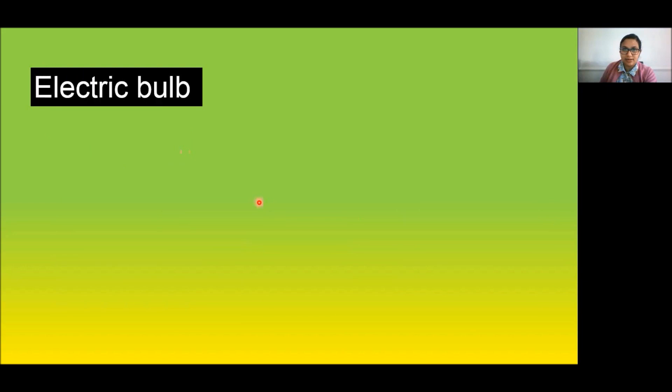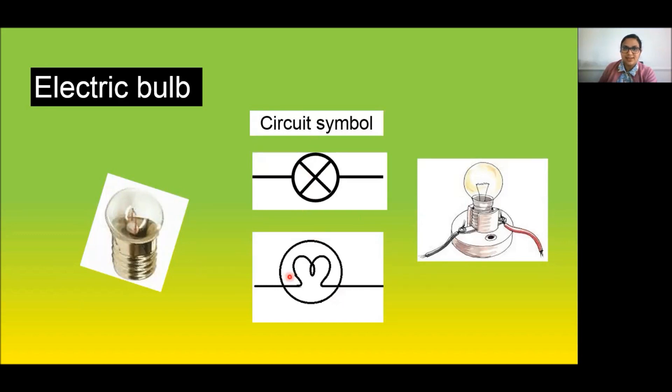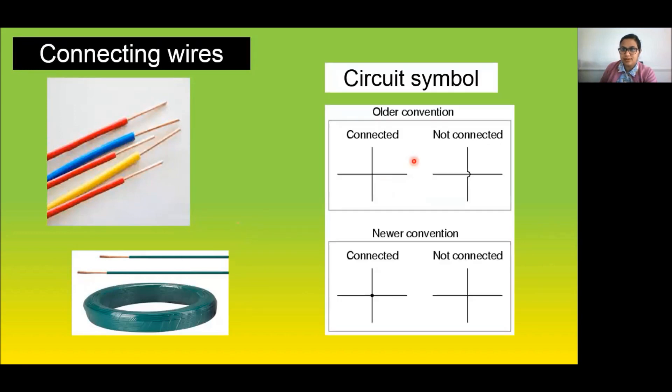Next is the electric bulb. The circuit symbol can be represented in both ways. Next is connecting wires. There are two ways you can represent this: the older convention like this and the newer convention like this.